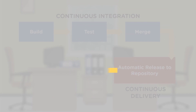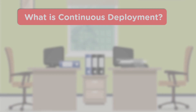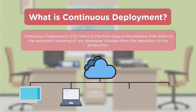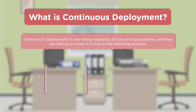Next is continuous deployment — automatic deployment to the production environment, the final stage in the pipeline. Rather than only preparing artifacts and running compilations or test case executions, we go one step further: actually deploying those artifacts to the production environment so that our changes go live.